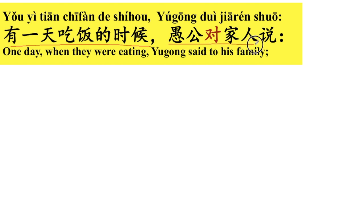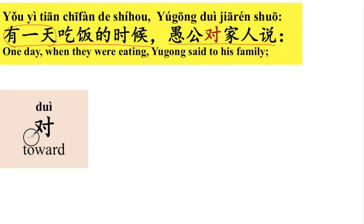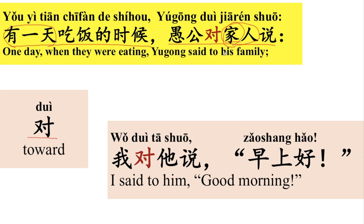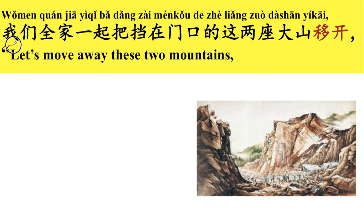有一天吃饭的时候，愚公对家人说。好，那我们来看一下。有一天 means one day. 吃饭的时候，就是when they were eating. 愚公对家人说。对 means toward. 家人 means family members. For example, 我对他说早上好，I said to him good morning.